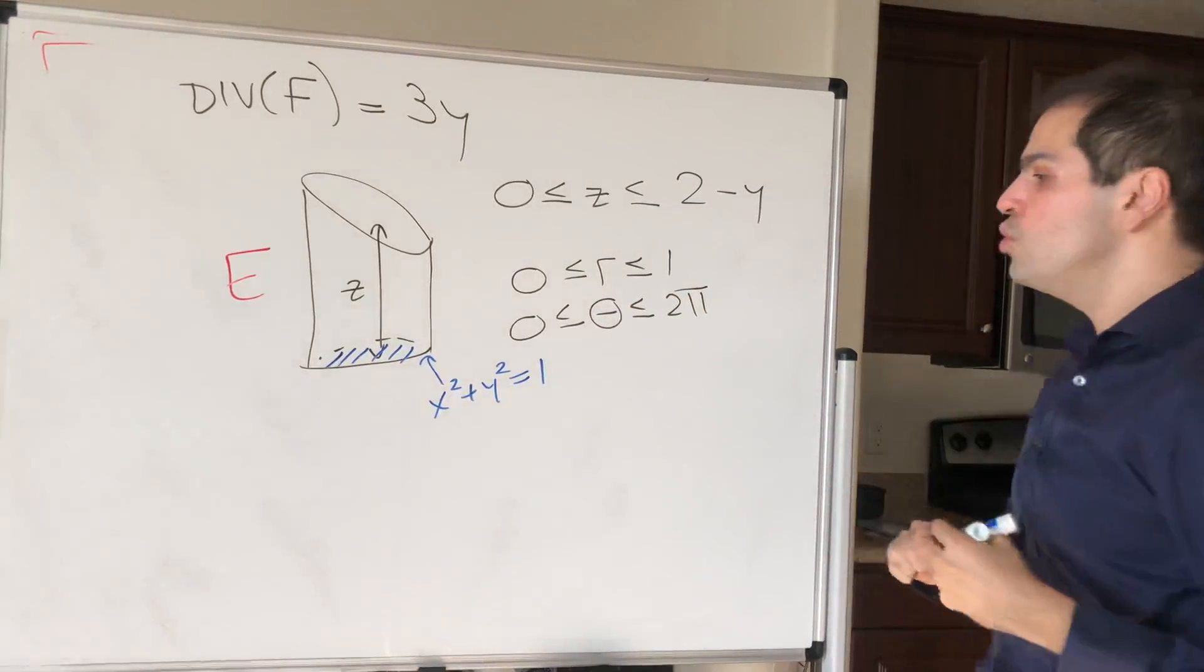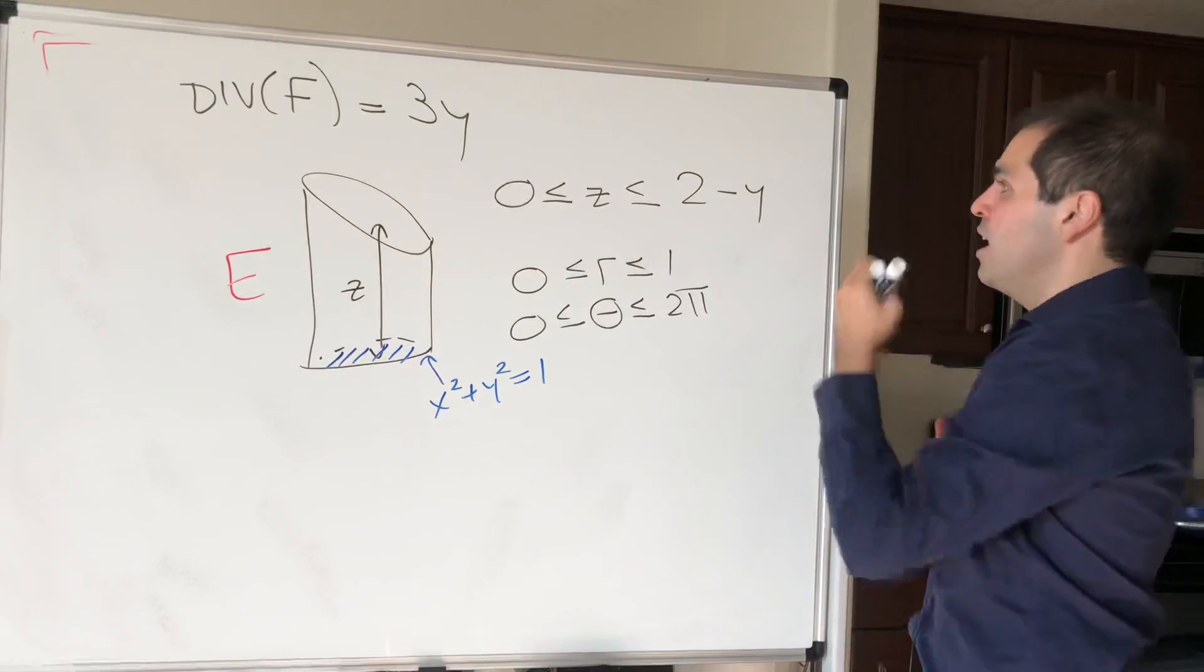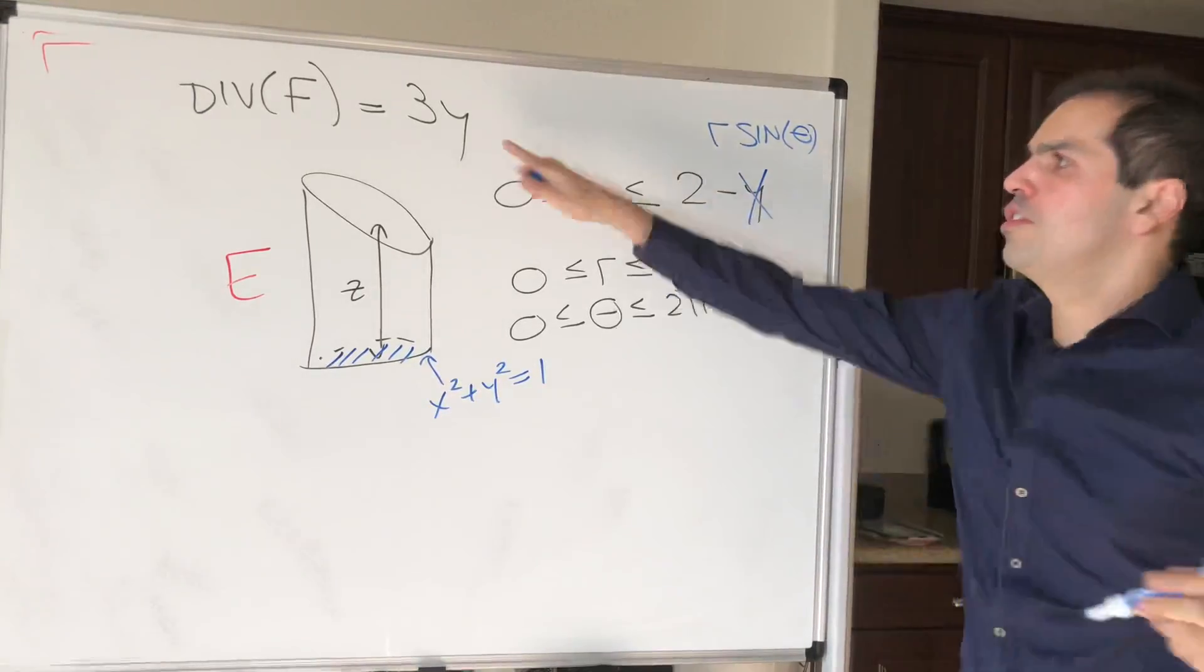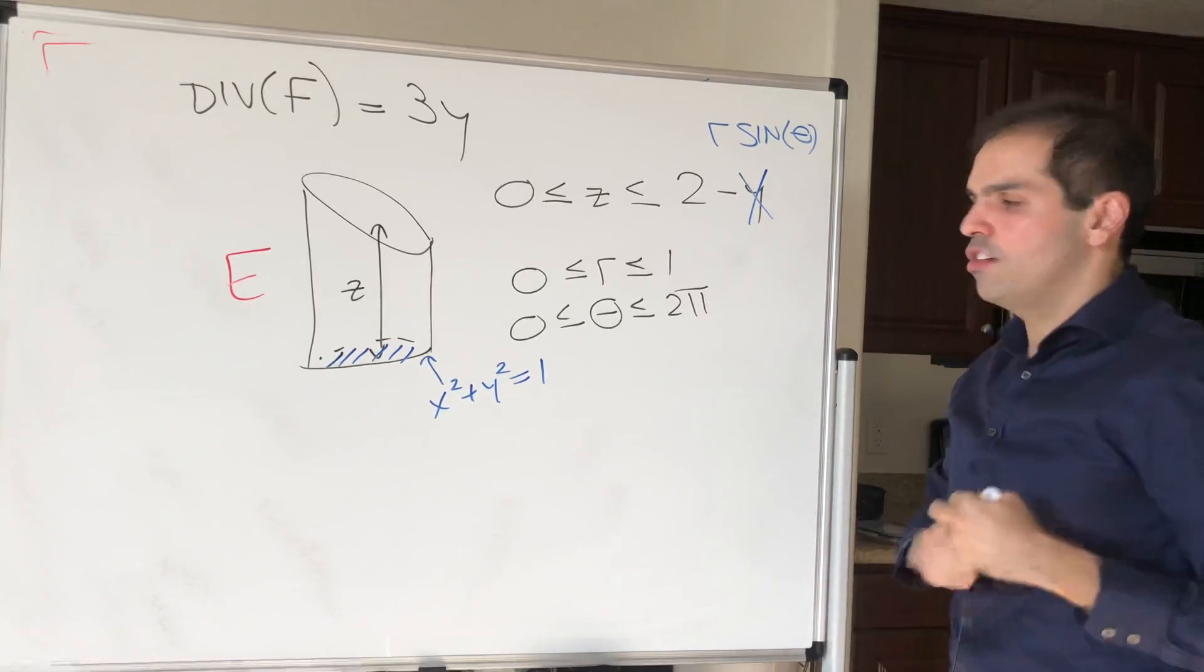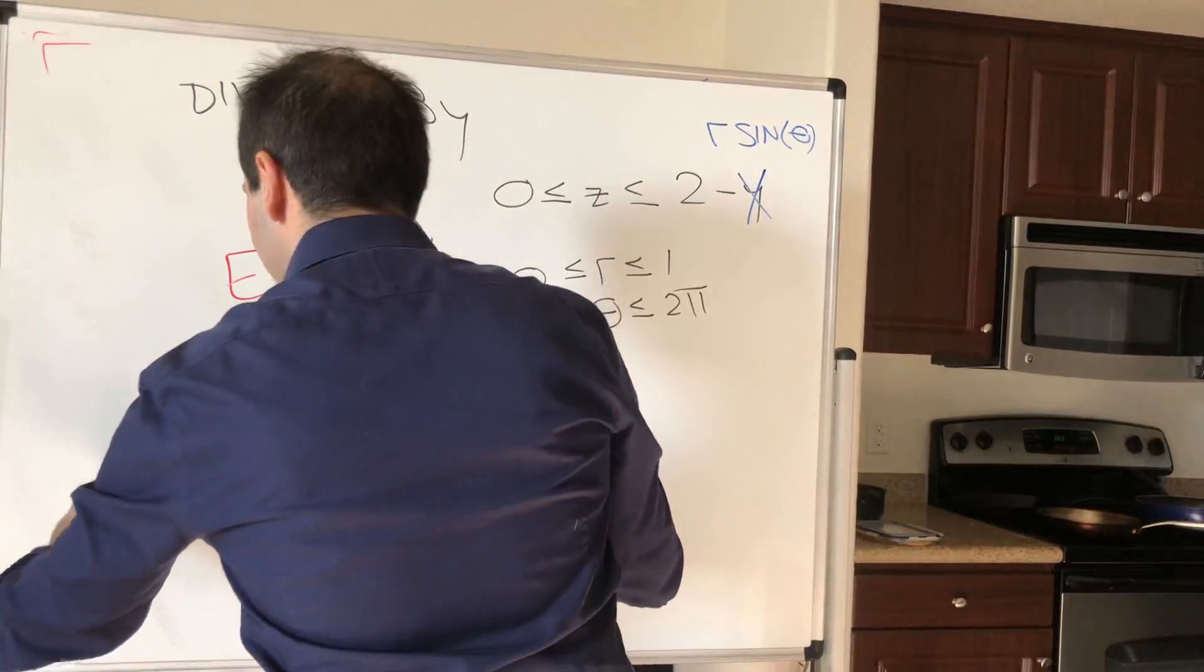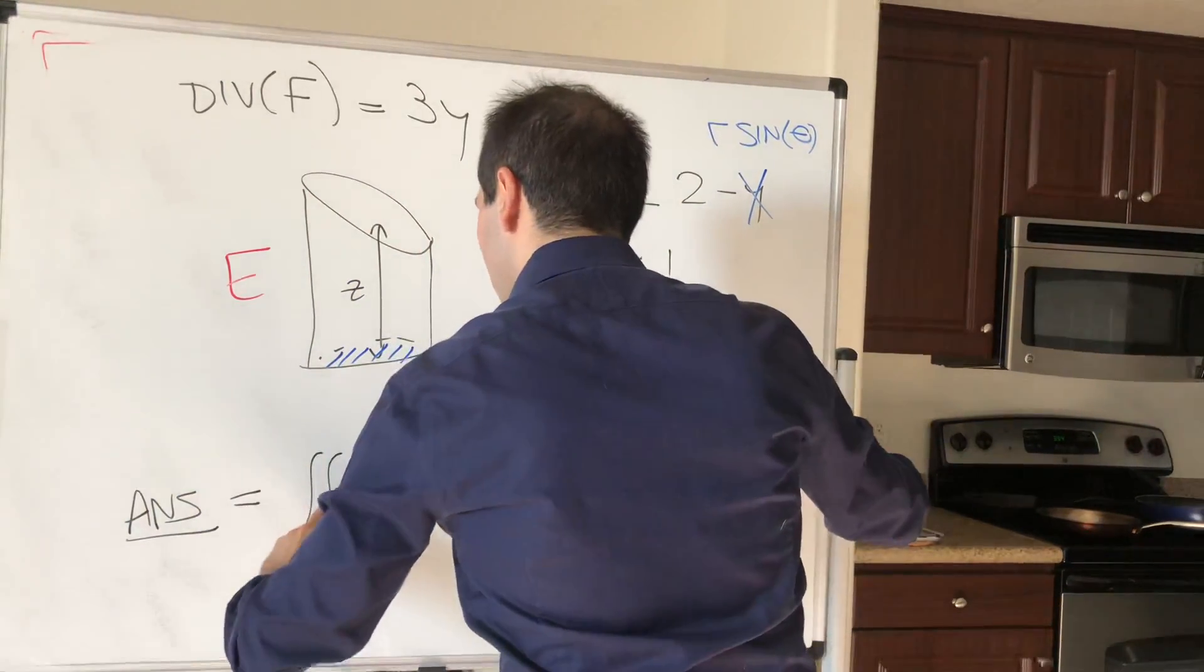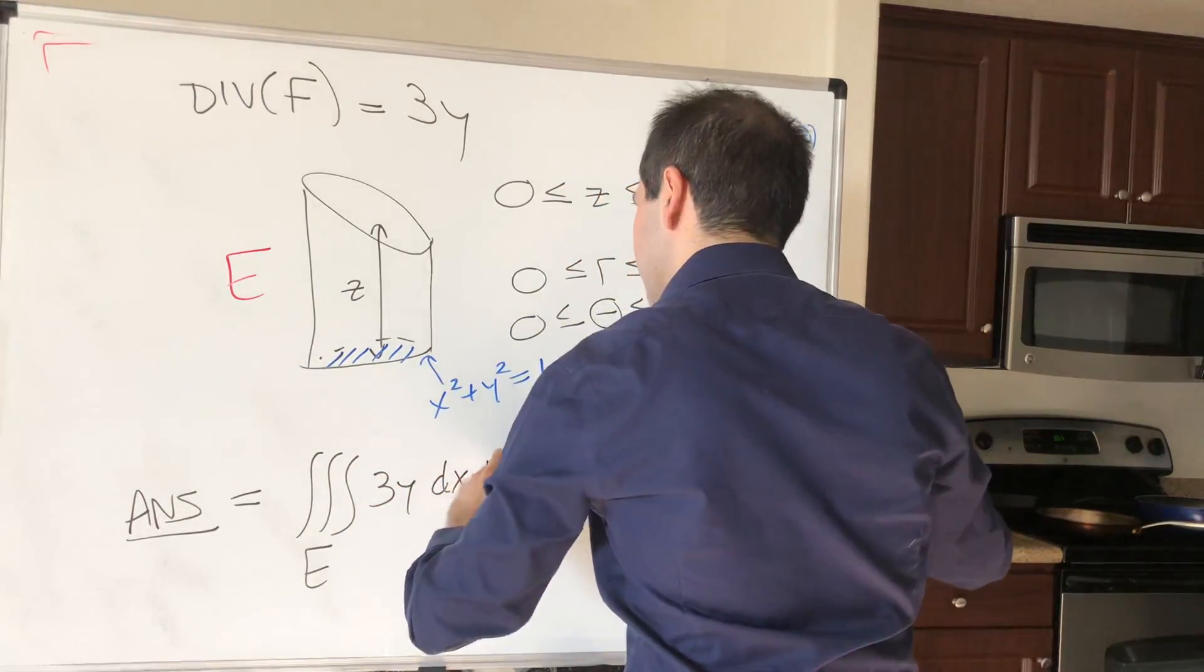And because we're using polar coordinates, we just need to replace this y by r sine of theta, and also here, for this 3y, we need to replace it by r sine of theta. So in the end, we get the following. So our answer is, remember, just a triple integral over E of the function 3y dx dy dz.